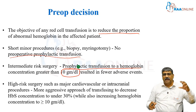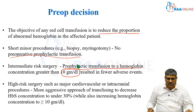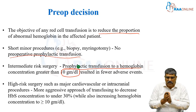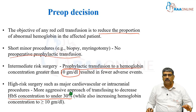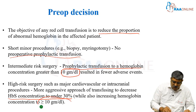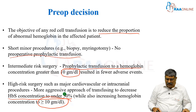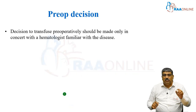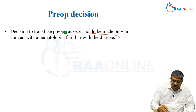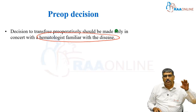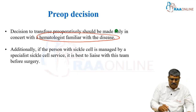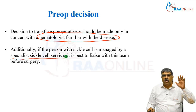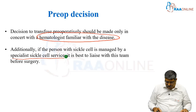In case of high-risk surgery, like a major cardiovascular or intracranial procedure, you have to follow a more aggressive approach. You should reduce the hemoglobin S concentration to less than 30%, and maintain the normal hemoglobin level at greater than 10 grams per deciliter. The decision to transfuse should be in consultation with a hematologist familiar with this disease or the primary treating physician. If the patient is managed by a specialist sickle cell service, it is always better to liaise with that team before surgery.